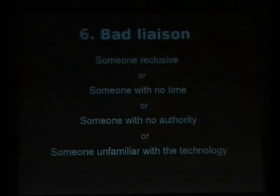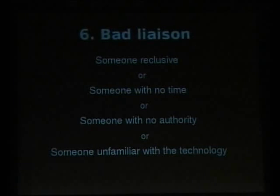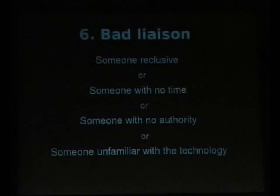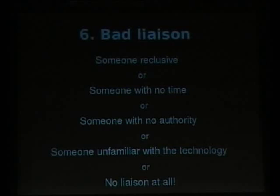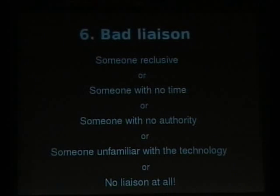Another good choice for a community liaison is somebody who knows absolutely nothing about your project. For example, if you have an open source project written in Perl, you want to get a Java person to be your liaison. And then, of course, a really good technique is to let the position of liaison or manager go vacant for three or six months at a time without any explanation or preferably notice. Keep their email account alive so people keep sending stuff to them even though it won't be responded to.